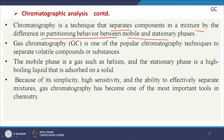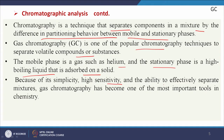The mobile phase can be in gas phase or liquid phase. When it is a gas phase, it is called gas chromatography. Gas chromatography is one of the popular chromatography techniques to separate volatile compounds or substances. The mobile phase is a gas such as helium, and the stationary phase is a high boiling liquid adsorbed on a solid. Because of its simplicity, high sensitivity, and ability to effectively separate mixtures, gas chromatography has become one of the most important tools in chemistry.